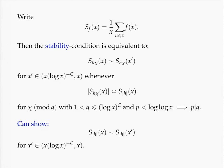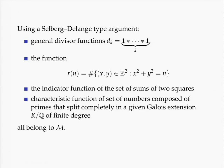That might give a starting point for studying this final condition. In particular, one can use it in combination with a Selberg-Delange type argument to show that the following functions belong to our class M: generalizations of the divisor function (k-fold convolution of the all-one function), the function counting representations by sums of two squares, the indicator function of the set of sums of two squares, and similar functions related to zeta functions or L-functions — for instance, the characteristic function of integers composed completely of primes that split completely in a fixed finite Galois extension of Q.